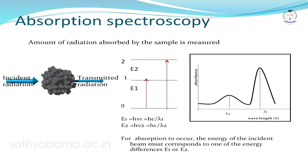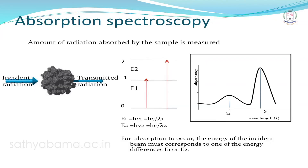In absorption spectroscopy, the sample is stimulated by an external radiation and undergoes reflection, refraction, or transmission. Some species in the sample absorb the incident radiation and move into their excited state, and the amount of radiation absorbed is measured.